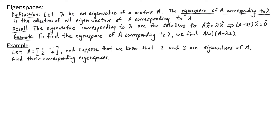Let's look at some examples. Let A be the matrix with entries 1, negative 1, 2, 4. Suppose that we know that 2 and 3 are eigenvalues of A, and we're asked to find their corresponding eigenspaces. Let's start with the eigenvalue lambda equals 2, so we want to find the null space of A minus 2I.